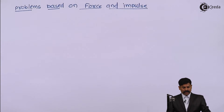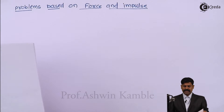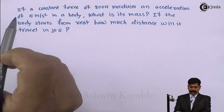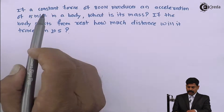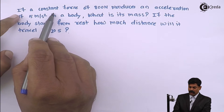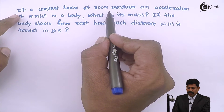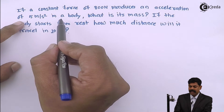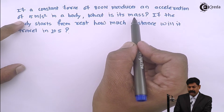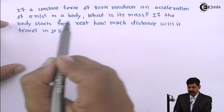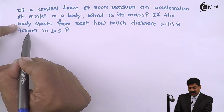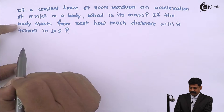Hello friends, now we will see problems based on force and impulse. This is the first problem: if a constant force of 800 newton produces an acceleration of 5 meter per second square in a body, what is its mass? If the body starts from rest, how much distance will it travel in 10 seconds?